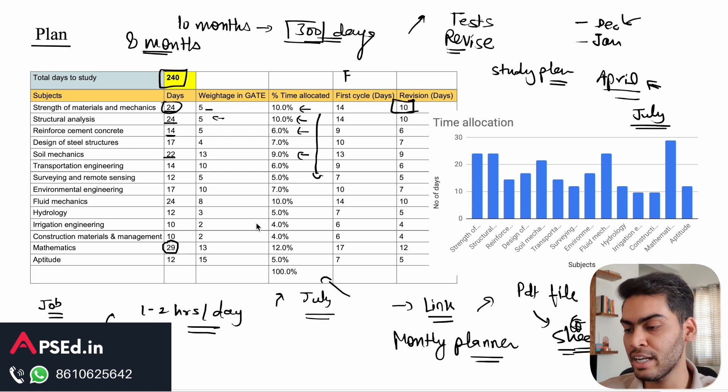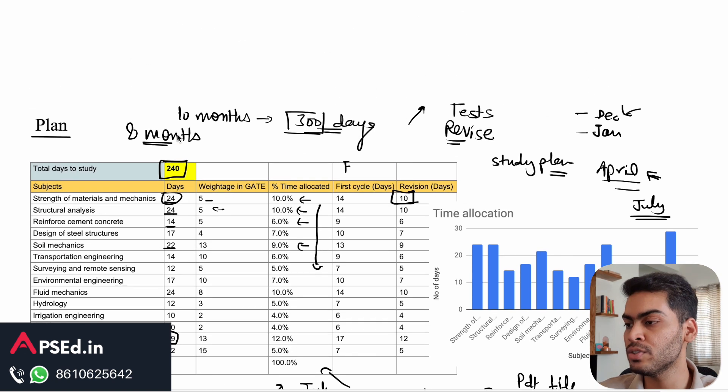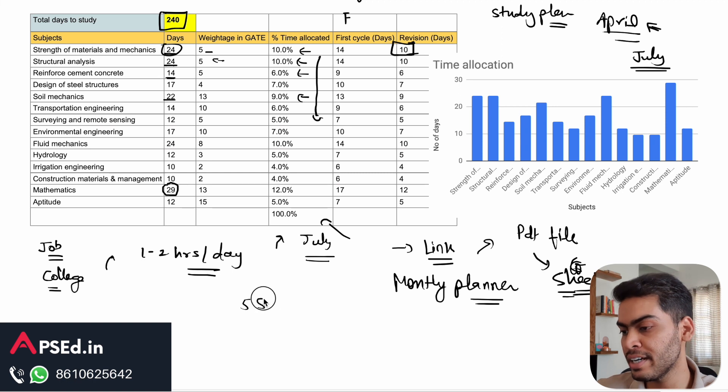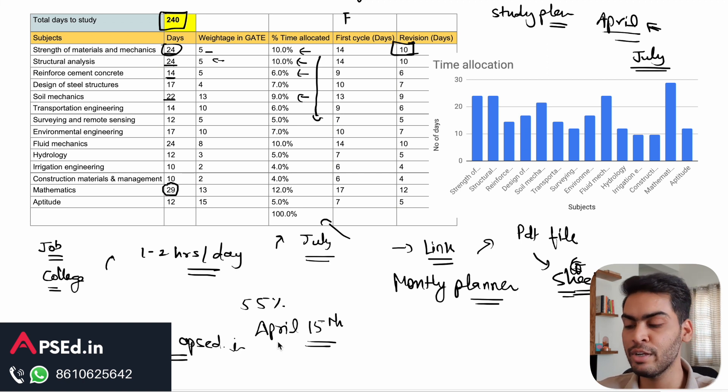Currently we are running 55% discount on our courses till April 15th. You can reach out on the WhatsApp number or our mail ID, that is support@psed.in. All the links will be in the description, so you can reach out to us and we'll be happy to help you with your preparation.